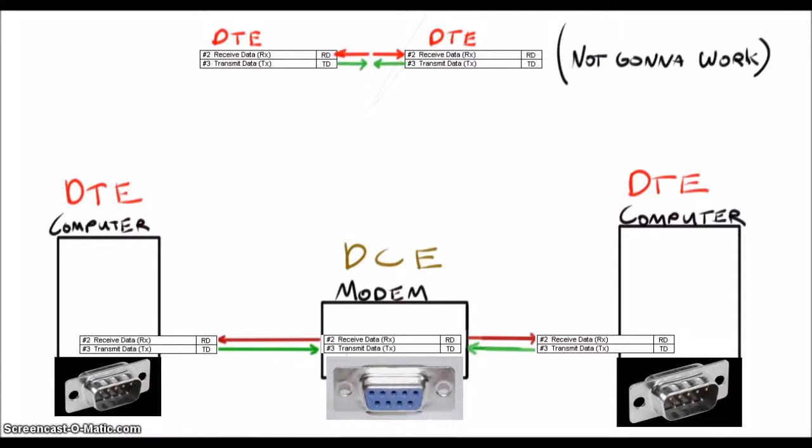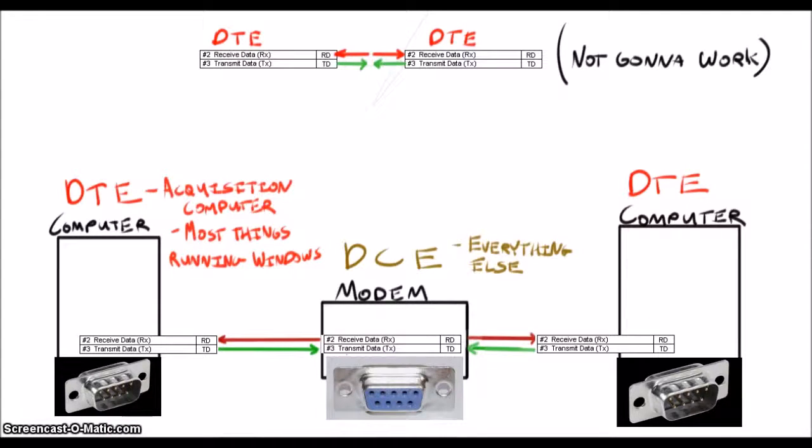It used to be that DTEs and DCEs would have male and female plugs respectively, giving you an idea of which one was which. However, with the kind of specialty equipment we use in the survey world, that is not always the case. So what is a DCE and what is a DTE? Well, your acquisition machine is a DTE. Generally, if the box has an operating system like Windows on it, it's a DTE. Something like a sonar TPU or a CTD though might actually be a DCE. The easiest way to tell is to just try the cable and see if it works.